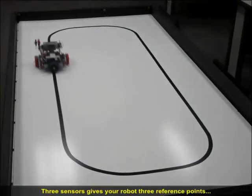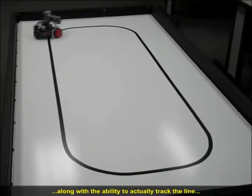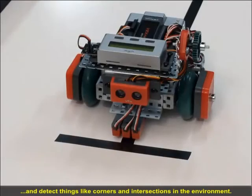Three sensors give your robot three reference points, along with the ability to actually track the line and detect things like corners and intersections in the environment.